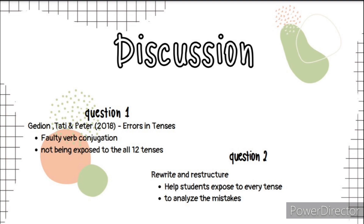According to Gideon, Tati and Peter 2018, the common mistake found in students' writing is error in tenses. Students make these errors because they do not completely understand the right tenses to apply. They also do not keep themselves updated with the rules of tenses, so they keep on making this error in their writing.